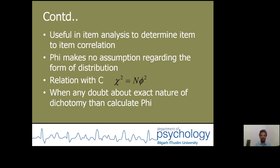The relation with the contingency coefficient is: chi-square is equal to n multiplied by phi square. When there is any doubt about the exact nature of the dichotomies, it is suggested to calculate the phi coefficient.